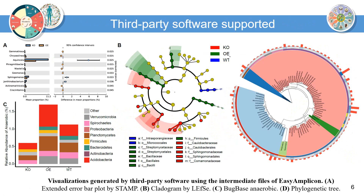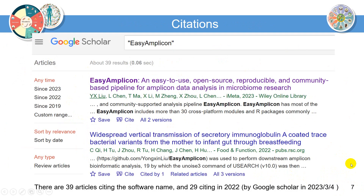Third-party software: visualizations generated by third-party software using the intermediate files of Easy Amplicon — extended error bar plot by STAMP, Platogram by LEfSe, BugBase anaerobic annotation, and phylogenetic tree. There are 39 articles citing the software name, and 29 citing in 2022.